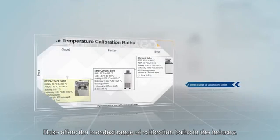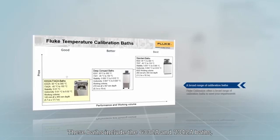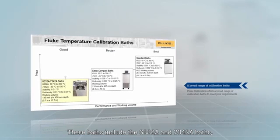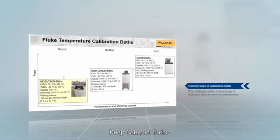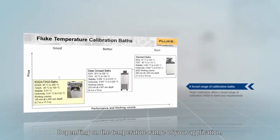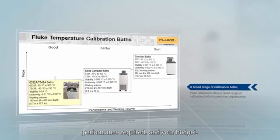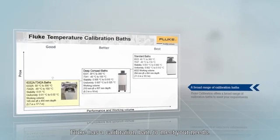Fluke offers the broadest range of calibration baths in the industry. These baths include the 6332 and 7342 baths, deep compact baths, and full-size standard baths. Depending on the temperature range of your application, performance required, and your budget, Fluke has a calibration bath to meet your needs.